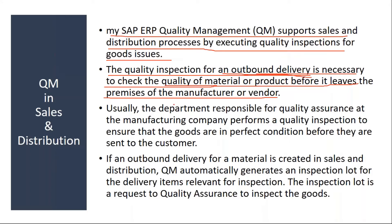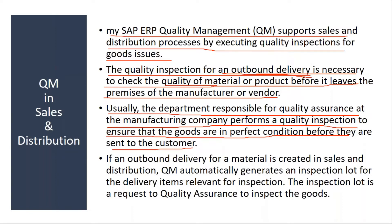In that case, they will do quality inspection for the SD outbound delivery. The department responsible for quality assurance at the manufacturing company performs a quality inspection to ensure that the goods are in perfect condition before they are sent to the customer. So they will do one more inspection - even though items are inspected during or immediately after production, sometimes they will do quality inspection just before delivering the product to the customer, as some customers insist on this.